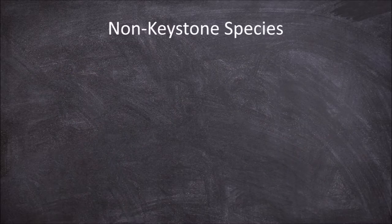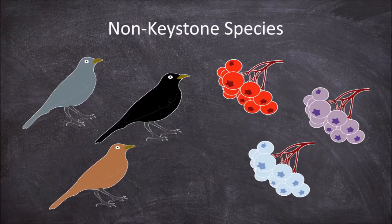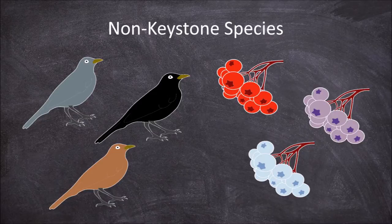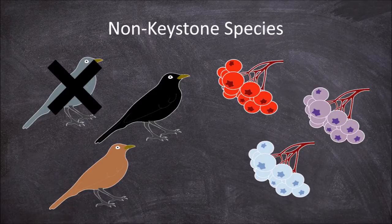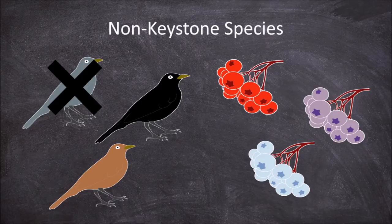No specific single species of bird or plant is reliant on a specific species of plant or bird. If you removed a bird species, there would still be other birds able to germinate the plants. So the removal of a species would have little overall effect on the community structure as a whole.